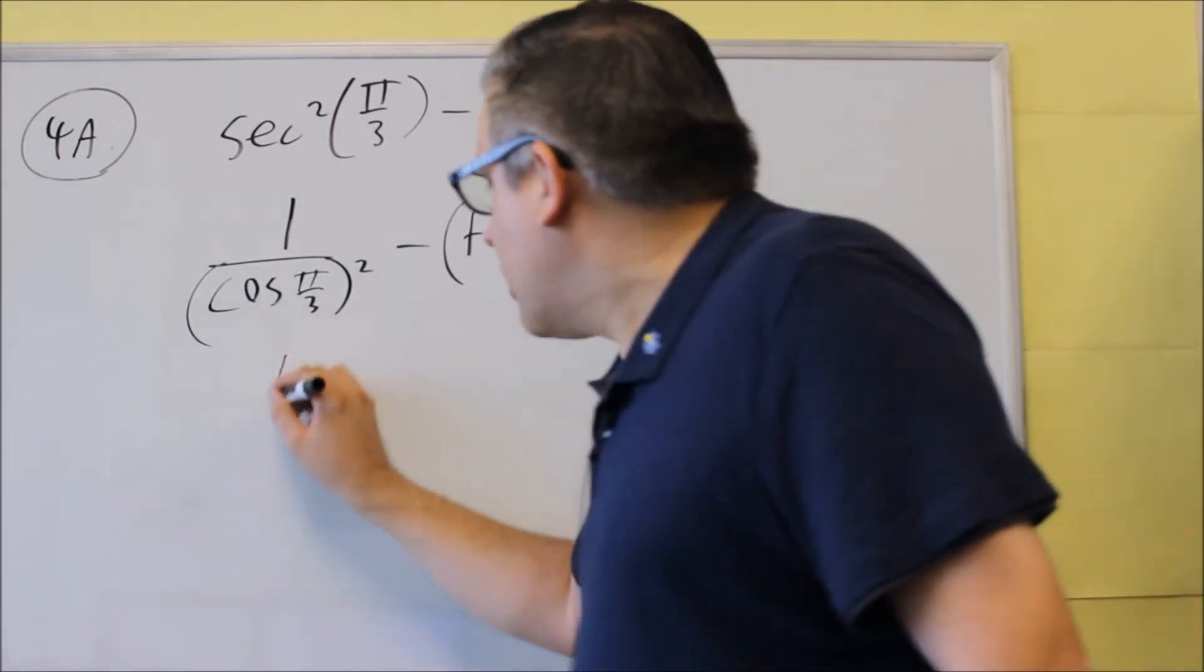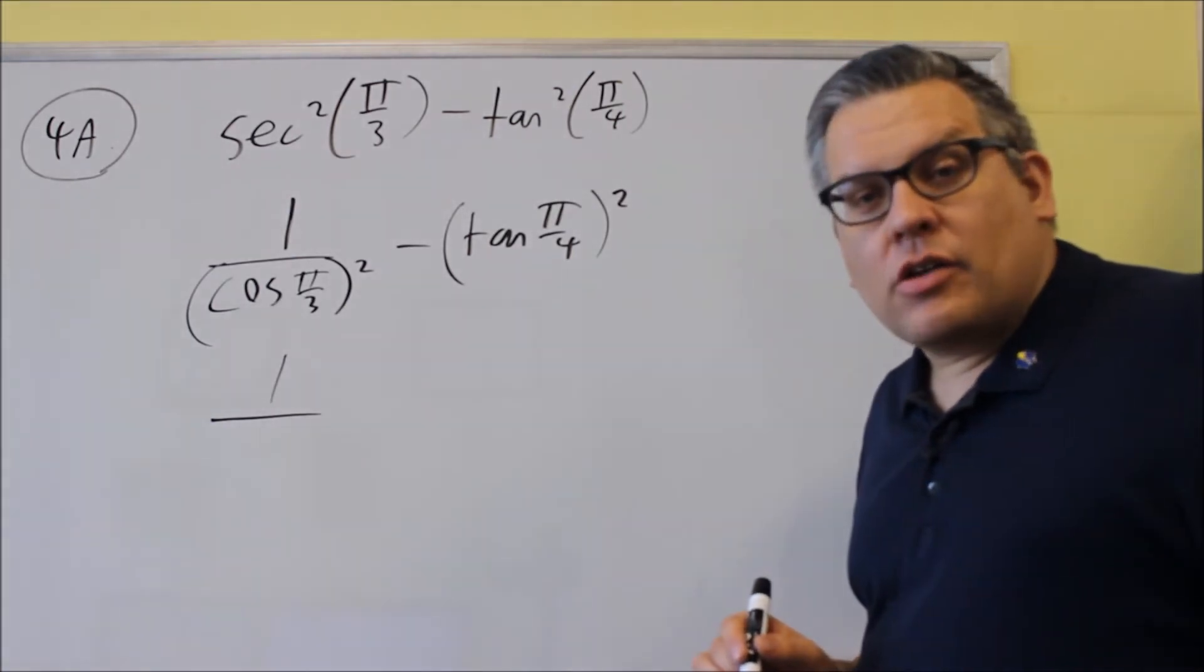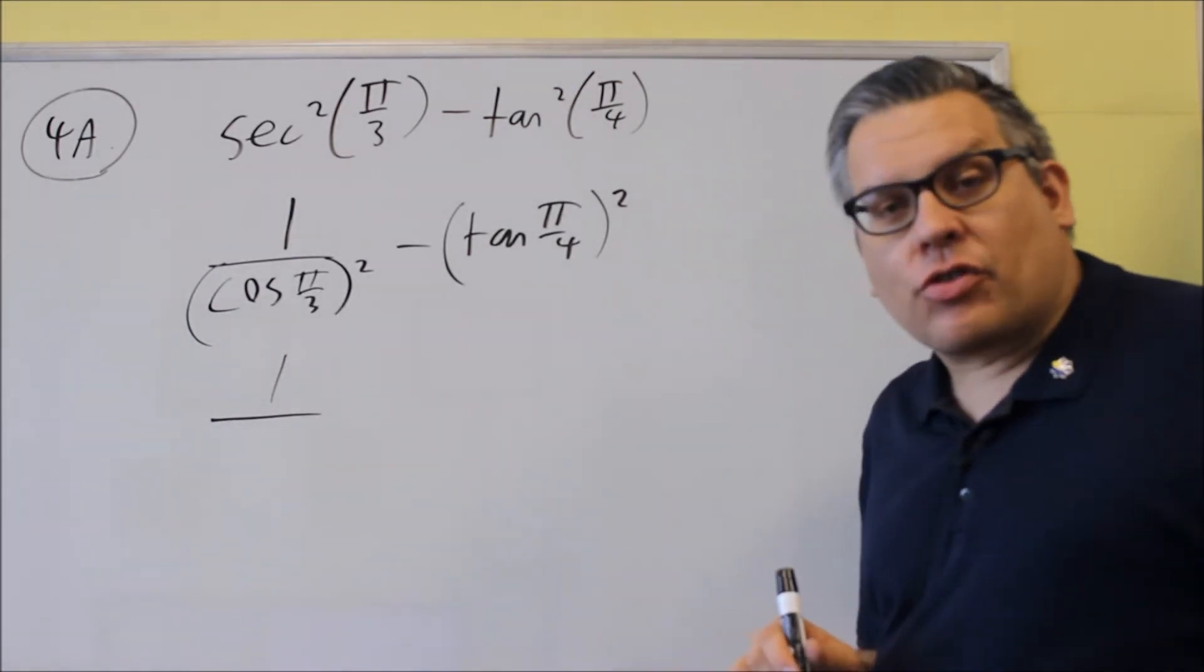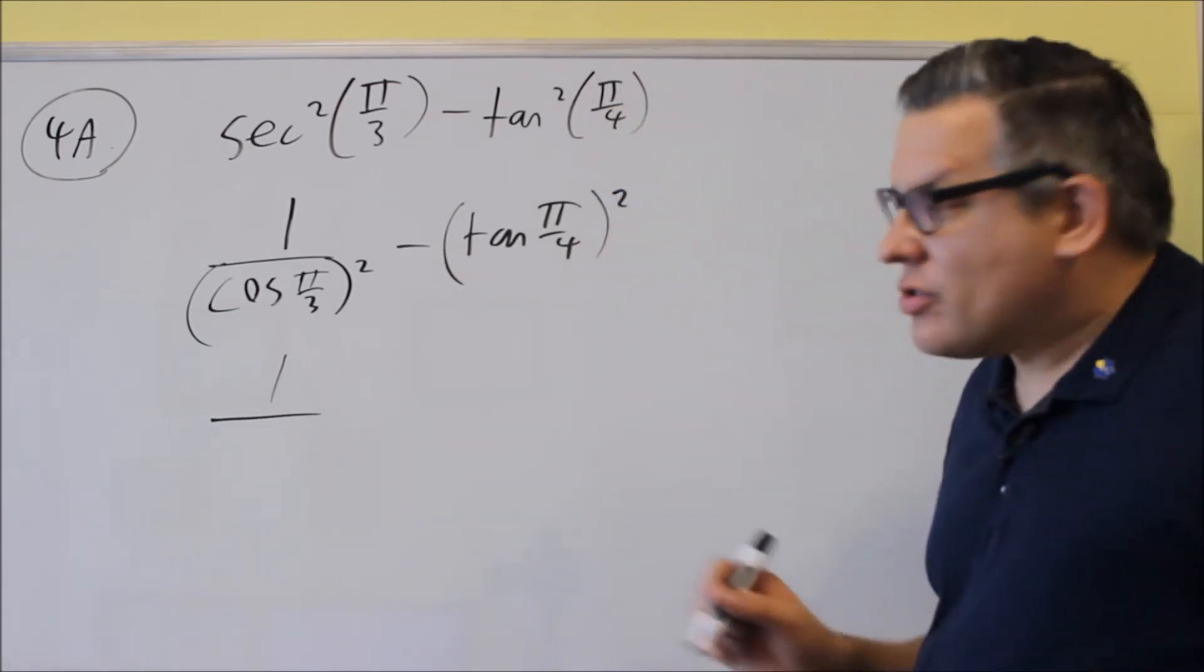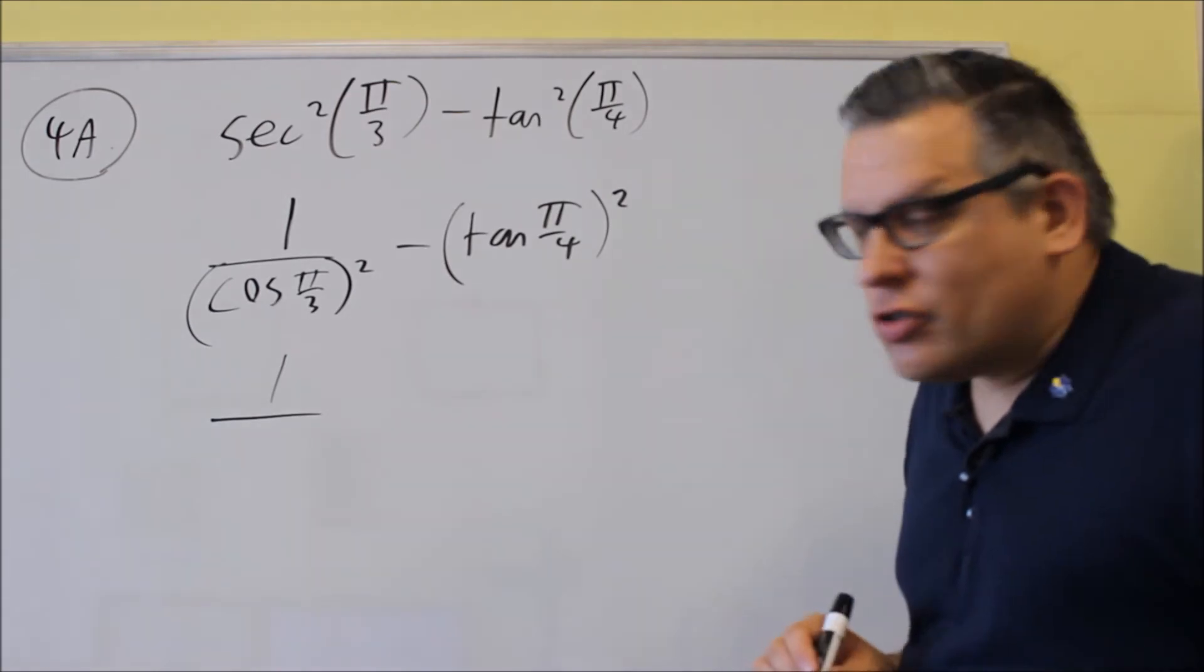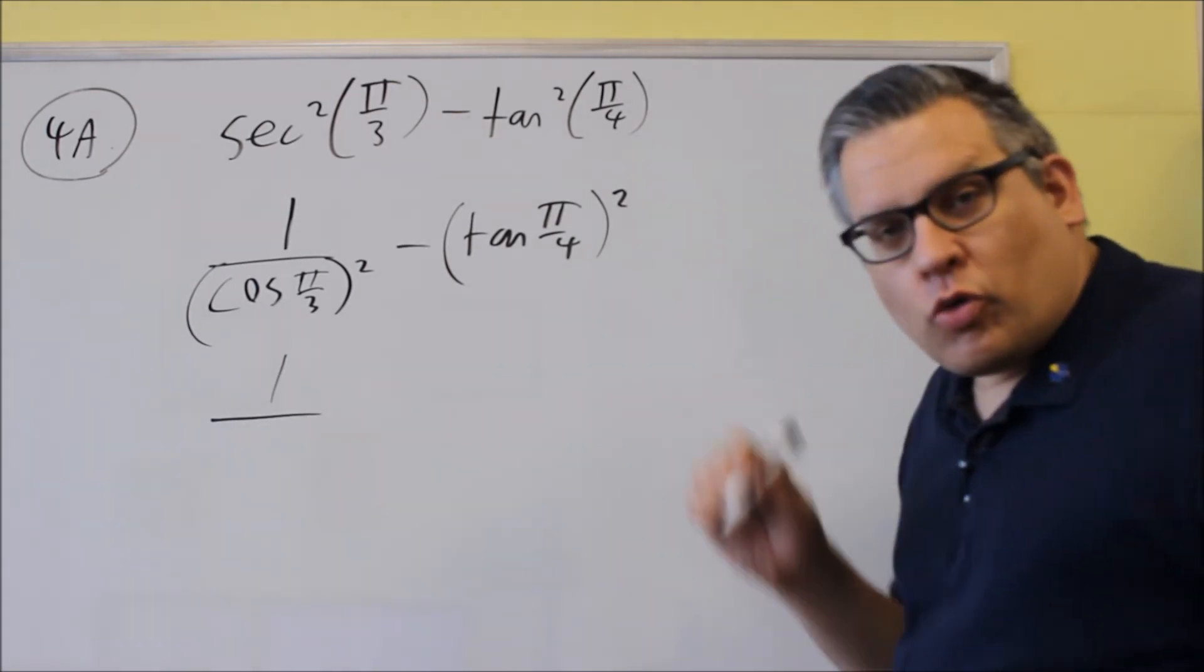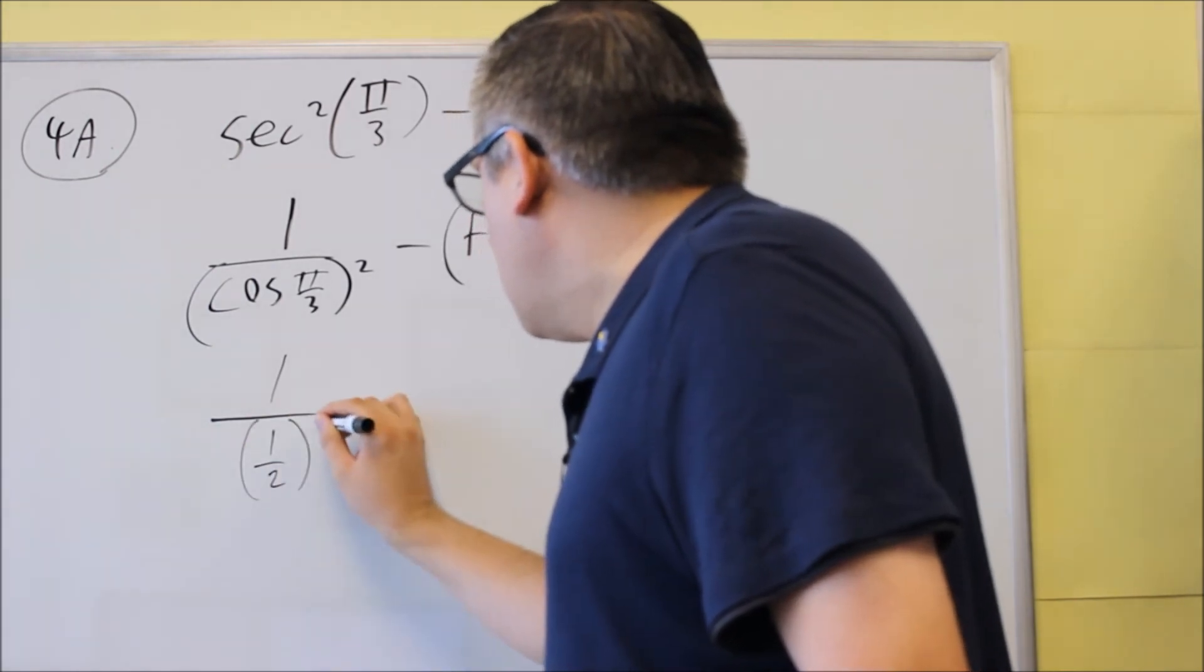So if we look at the table or unit circle, cosine pi over 3 would be the x value at pi over 3, and we want to put that exact value in. So in this case, if you want to keep it in radians, that's fine. If you want to convert it to degrees, you can as well, which would be 60 degrees. Now the value for that is going to be 1 half.